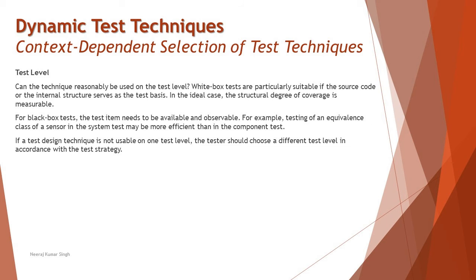Another factor to consider is the test level — can the technique reasonably be used at that test level? Not all techniques are applicable at every point in time. For example, at unit testing you can use equivalence partition and boundary value analysis, but for integration testing or system testing, state transition and decision table will be more applicable. Experience-based techniques are also applicable. White box tests are particularly suitable if the source code or internal structure serves as the test basis, and ideally the structural degree of coverage is measurable.